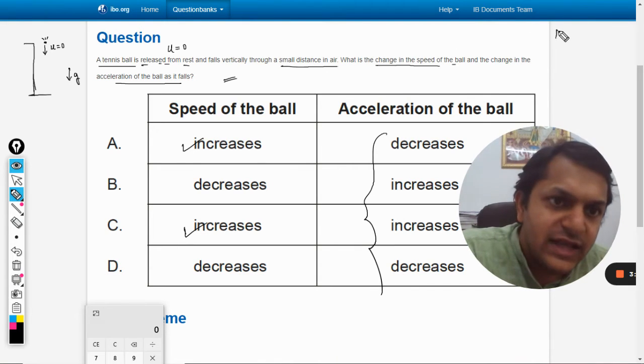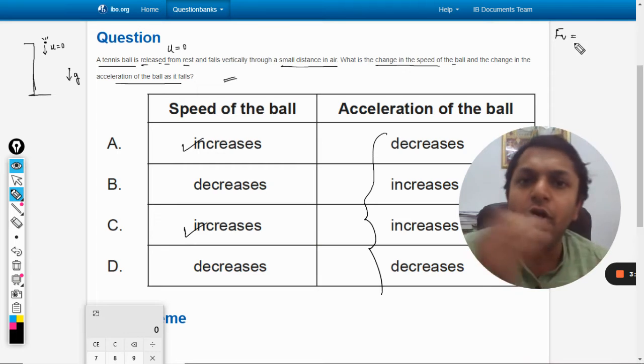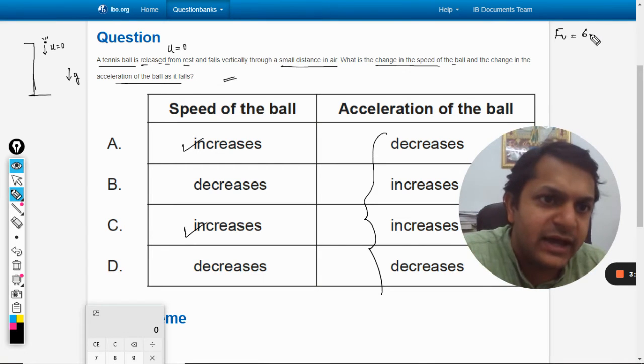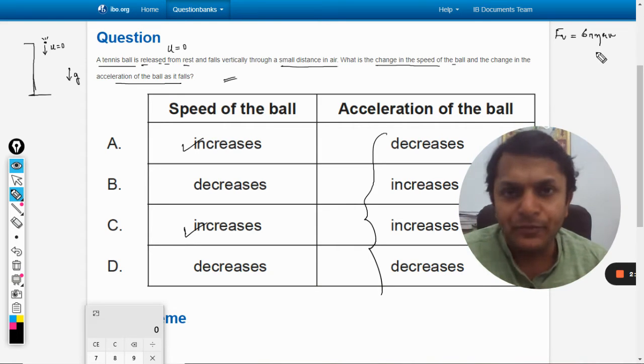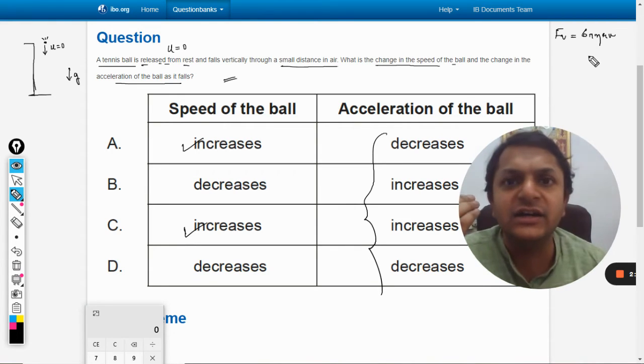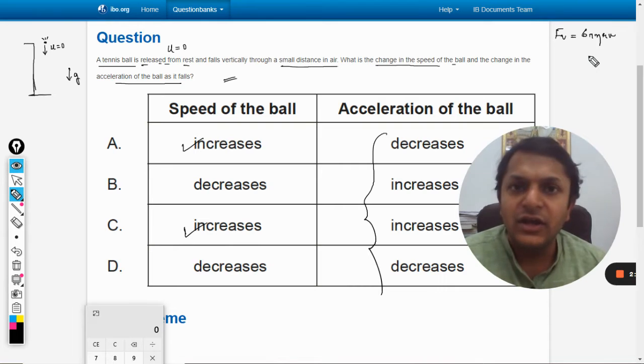If we are considering the air drag, then I must tell that the viscous force acting on spherical body is given by 6 pi eta r v, which is known as Stokes law, which is very famous when we are studying the fluid mechanics.